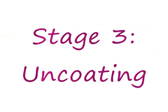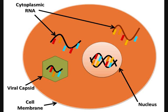Stage 3: Uncoating. Uncoating refers to all events that occur between the entry of a virion into its host cell and the beginning of expression of the viral genome. The process of uncoating may include removal or rearrangement of capsid proteins and loss of spikes, allowing the genome to access the cellular machinery for the activities of the central dogma.